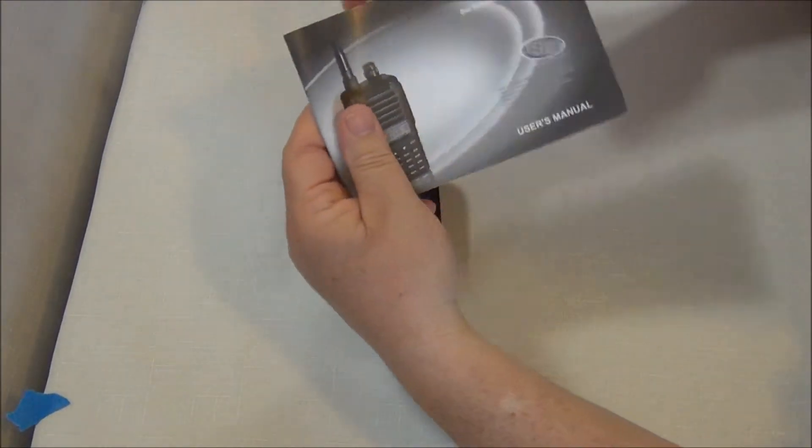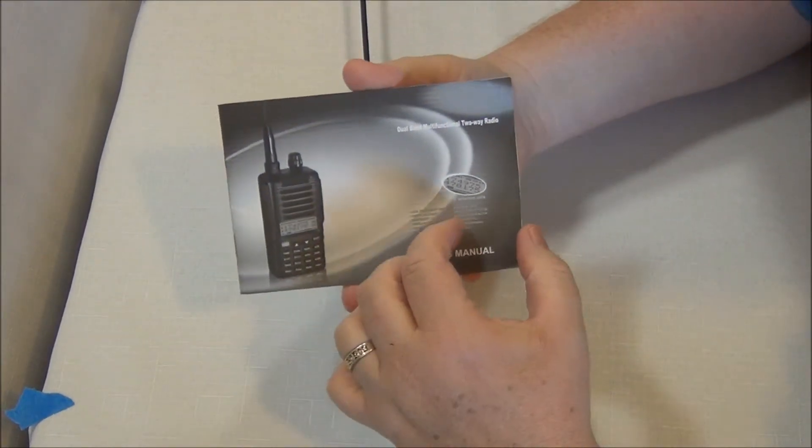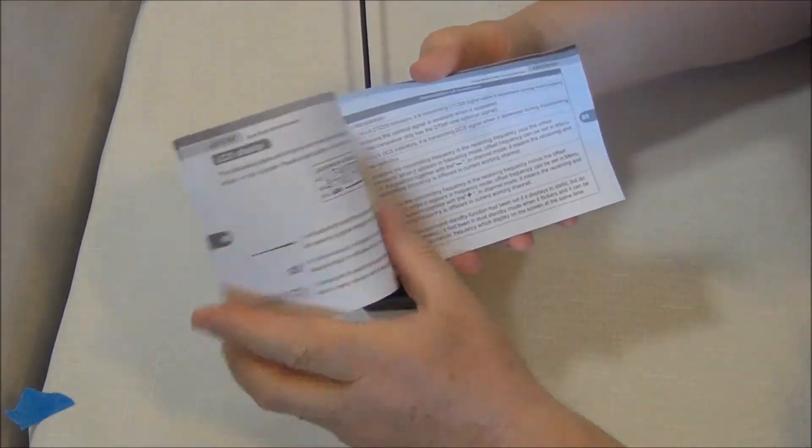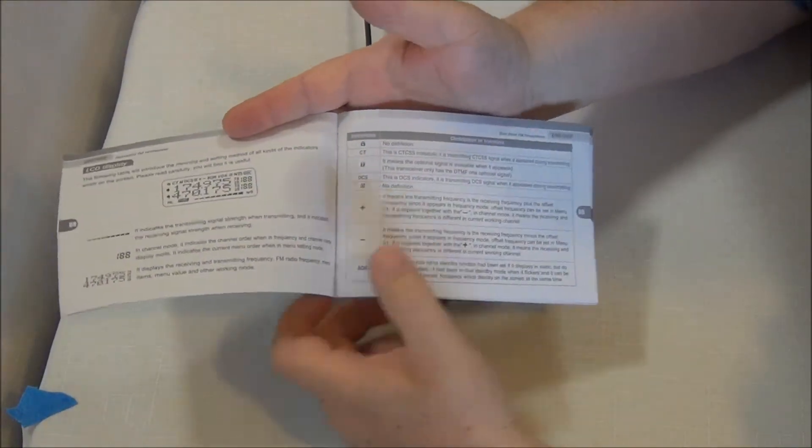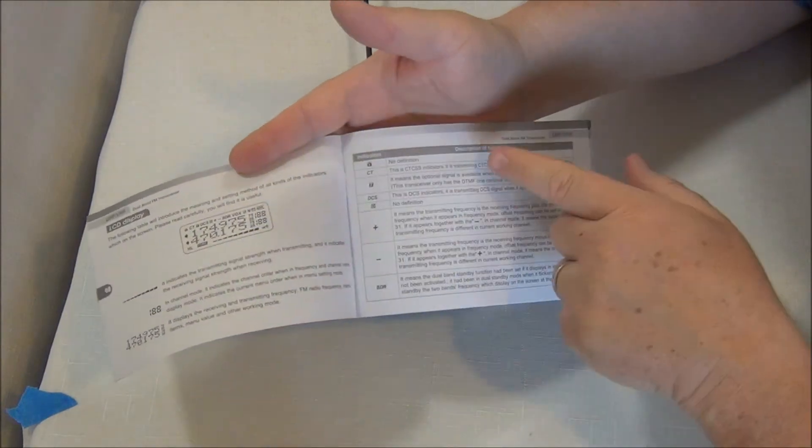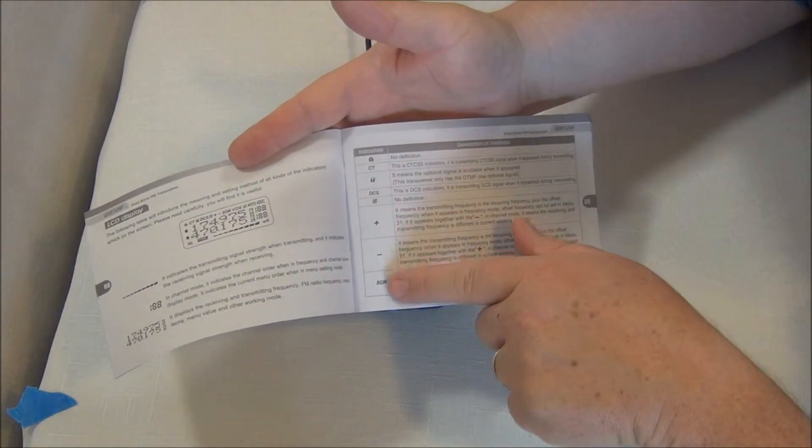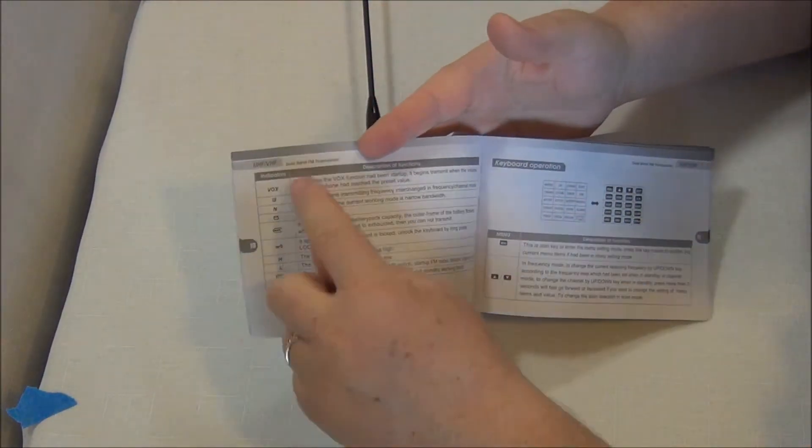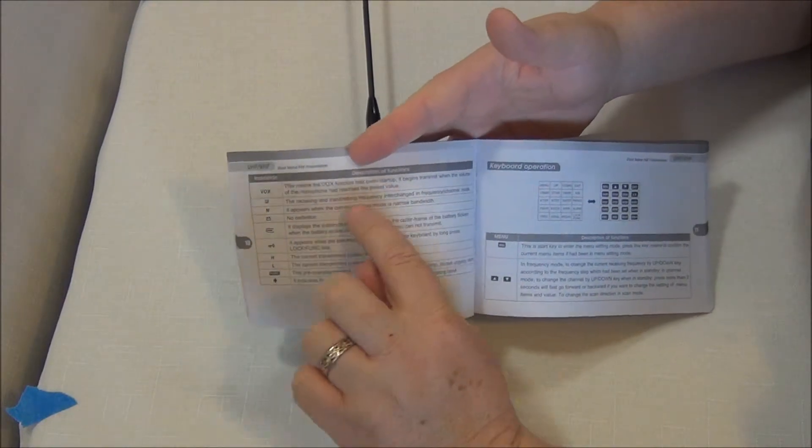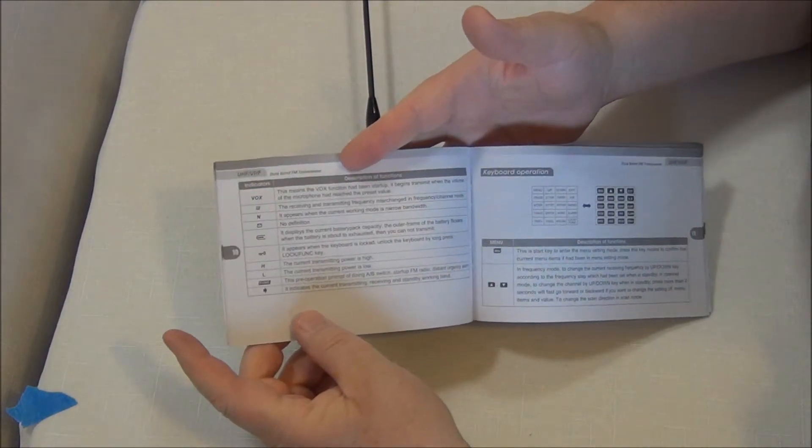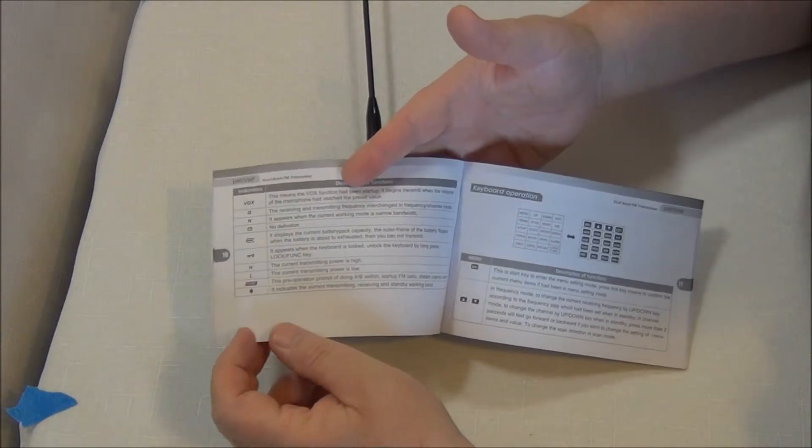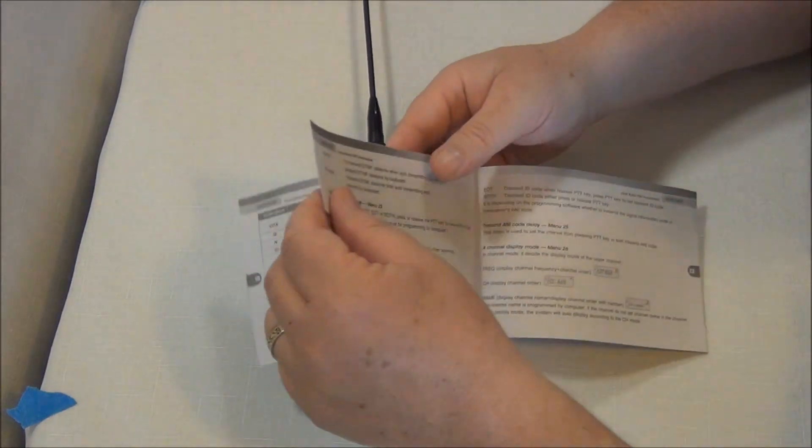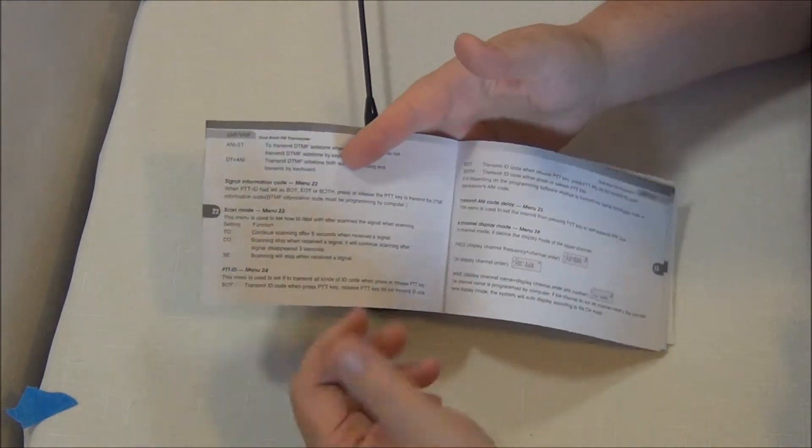And like I say, let me show you the manual here. This is your manual. Here's a description of your display and all of the different little things that may pop up there and what they indicate. There's your battery, this is wide band or narrow band, there's your key lock display. So the manual is actually pretty good, it tells you what all those little things are.